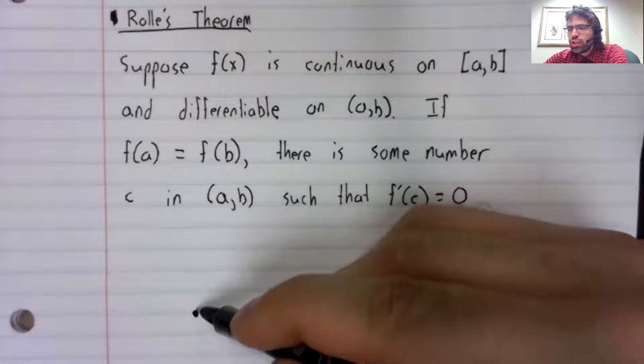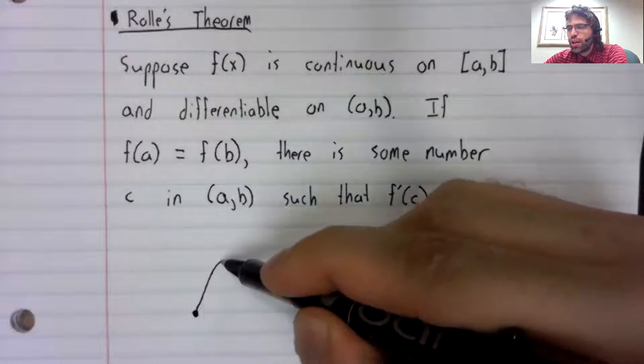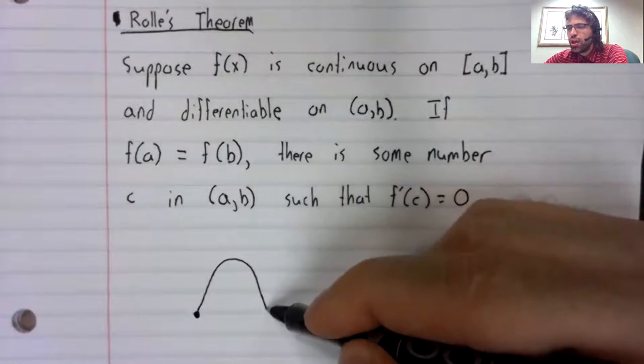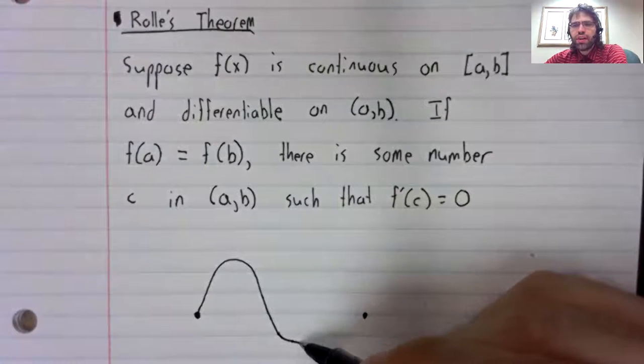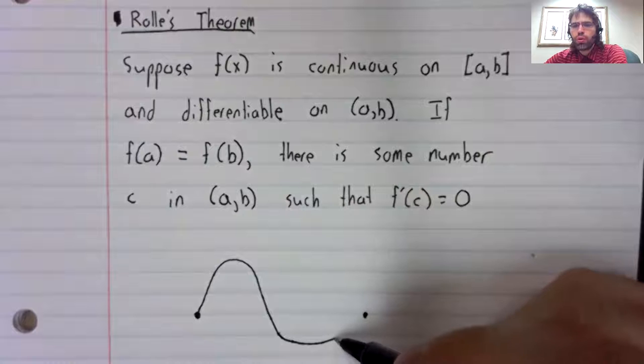Then the function can do whatever it does. But it's continuous, it doesn't have any sharp corners.